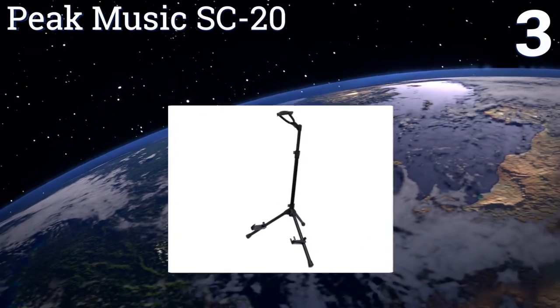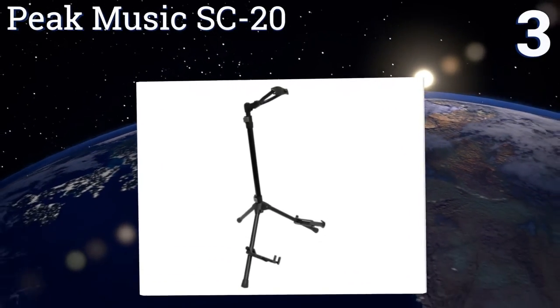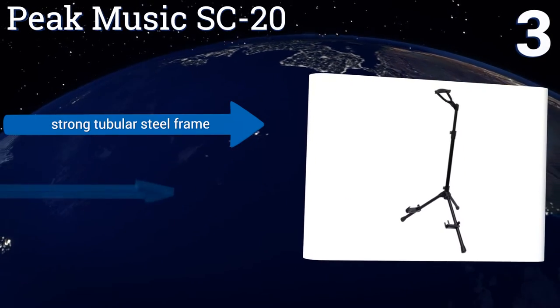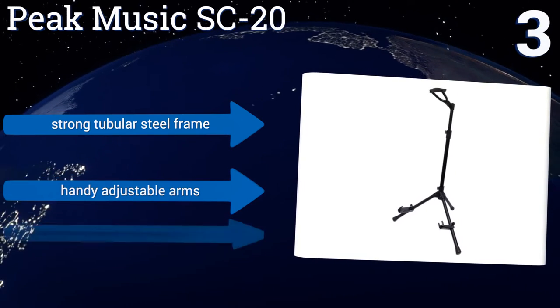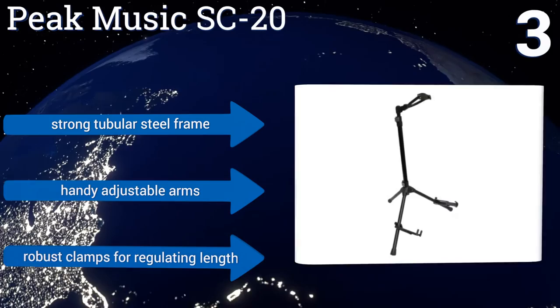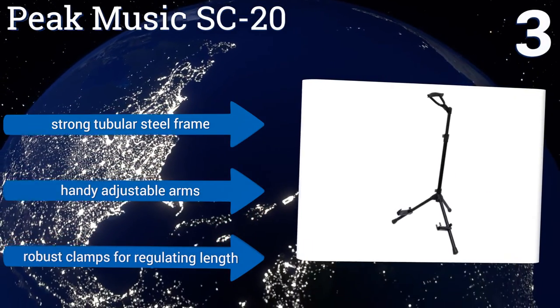Nearing the top of our list at number three, the Peak Music SC-20 acts as a cradle that supports the entire cello, allowing for customization of the bass support as well as the neck to ensure your instrument will never topple over. No assembly is required as you simply extend the main shaft to begin using it. It features a strong tubular steel frame, handy adjustable arms, and robust clamps for regulating length.